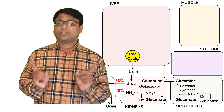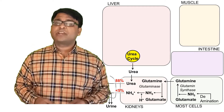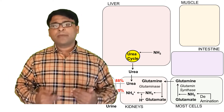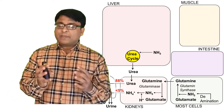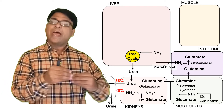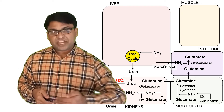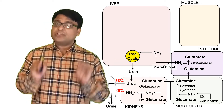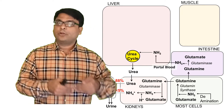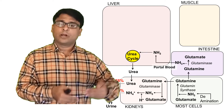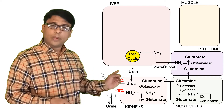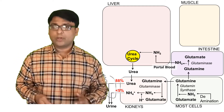Each urea molecule contains two nitrogen atoms, and it is important to understand the sources of those nitrogen atoms. One source is ammonia. In the intestine, glutamine produced by most cells is converted into glutamate, releasing ammonia. This ammonia enters the portal blood and is directly taken up by the liver — thankfully not increasing the pH of the general circulation — where it enters the urea cycle and is converted into urea. This is how the intestine contributes to urea formation in the liver.